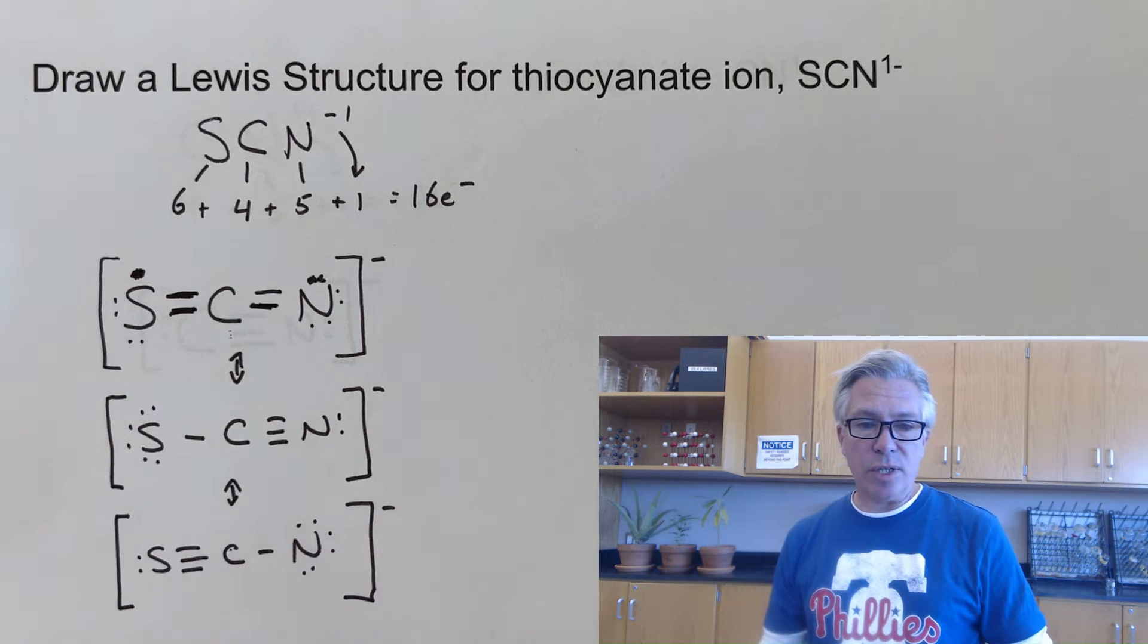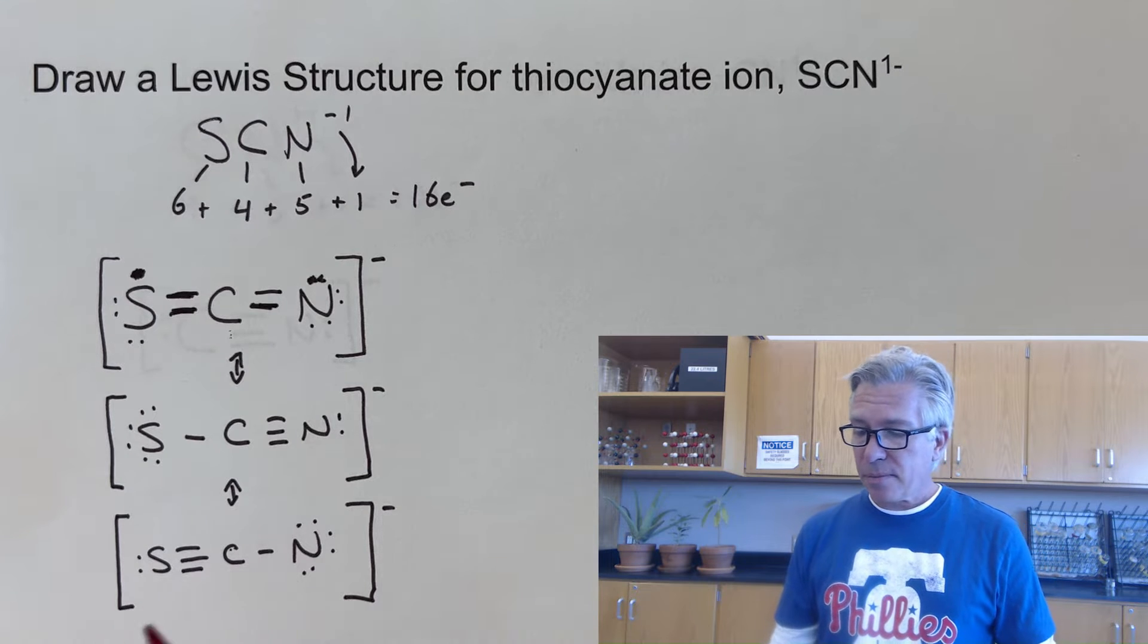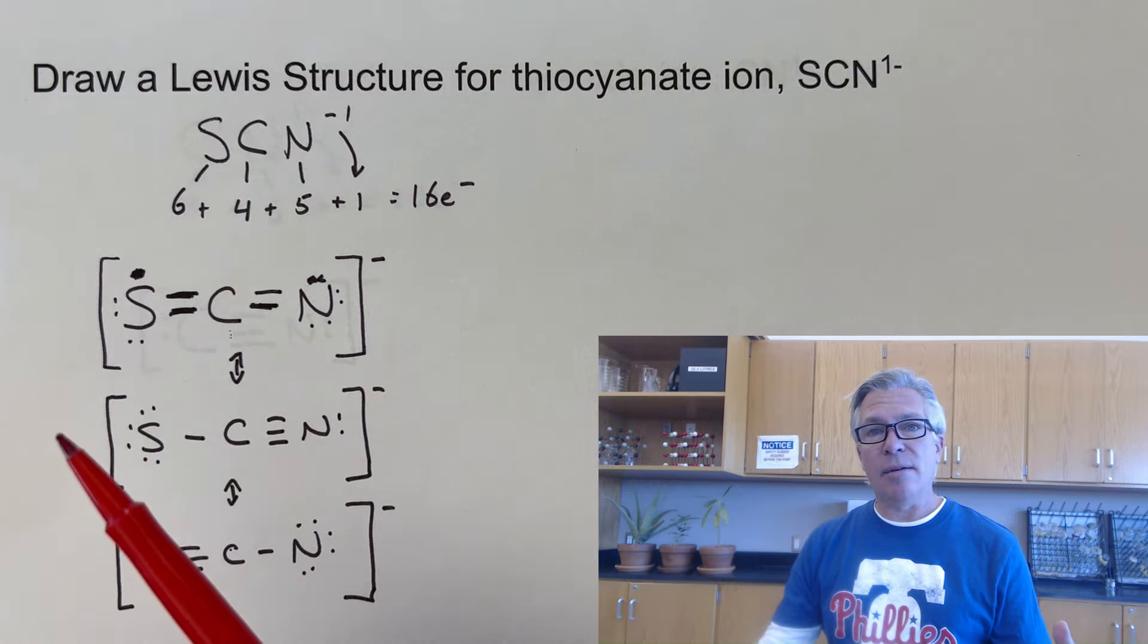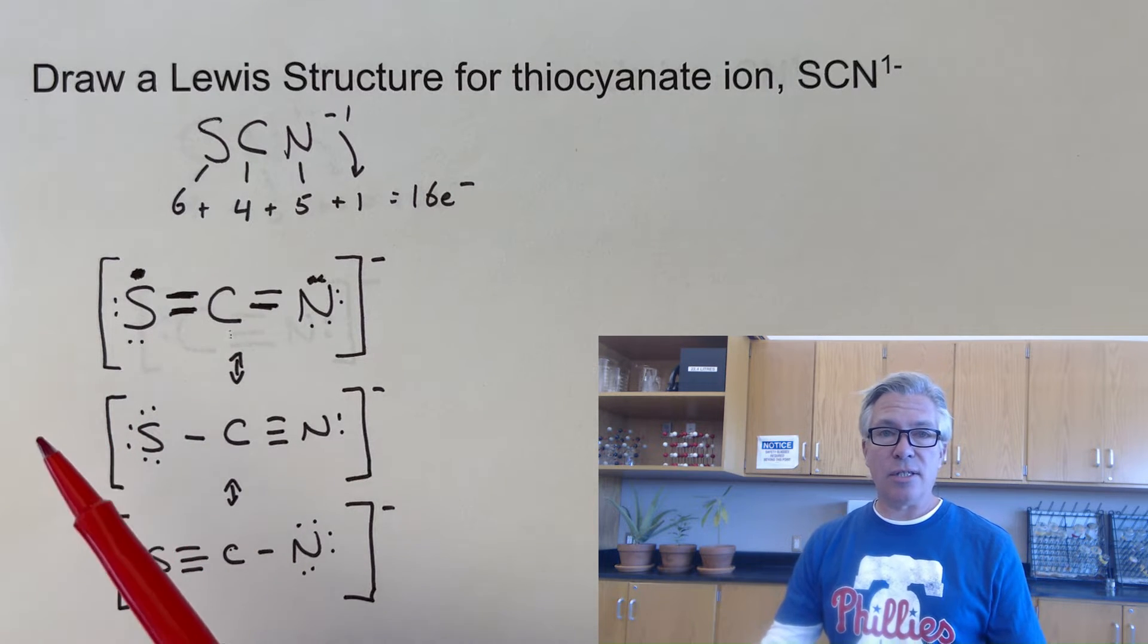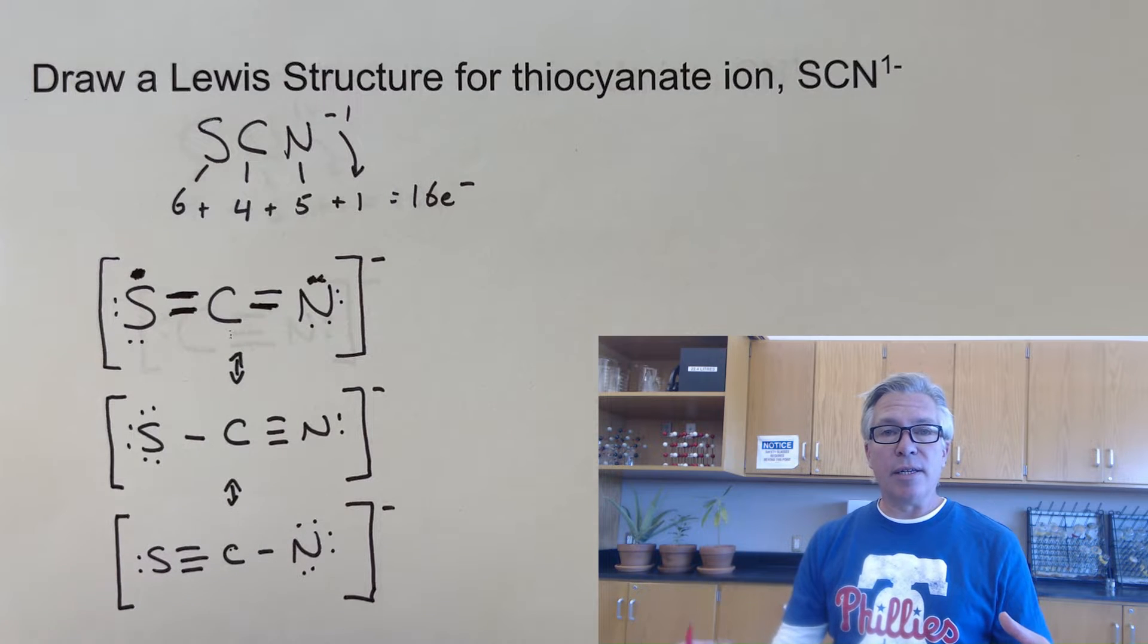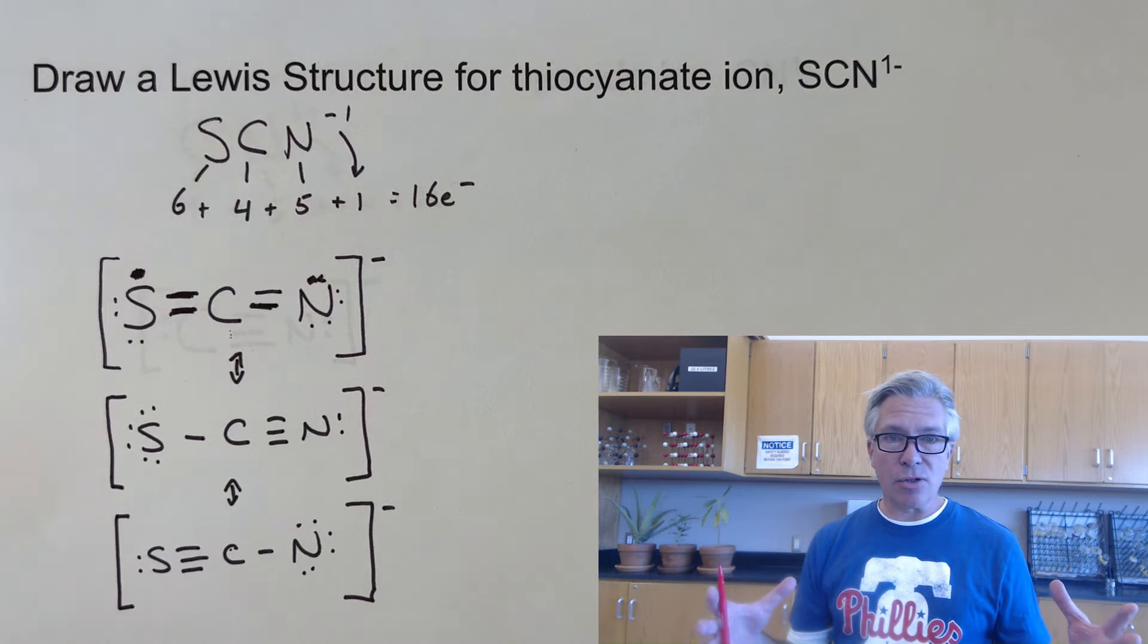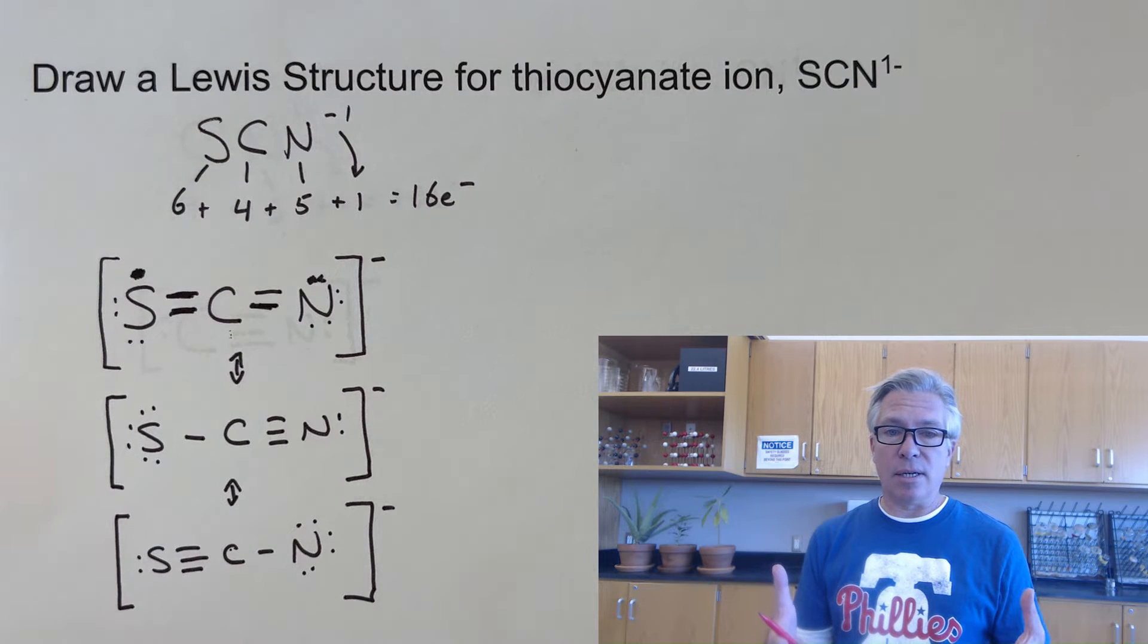And in order to answer that question, we can use a tool we chemists use called formal charge. Now, formal charge is the apparent charge on an atom in a molecule, and it's different from an oxidation state. An oxidation state is the charge that we would give it if the molecule broke apart and everybody took off with as many electrons as they possibly could. Some would have more, some would have less, and we would assign the charge that way.